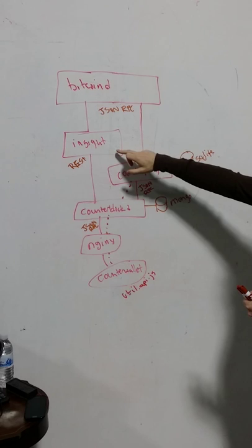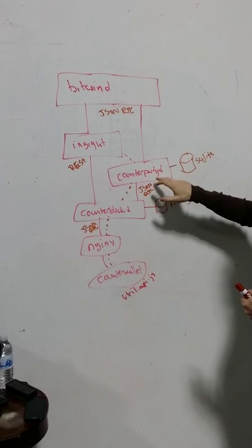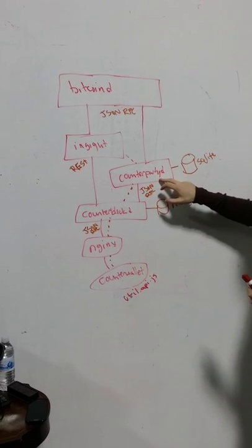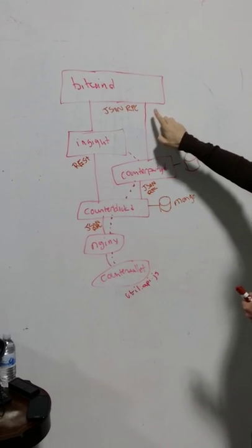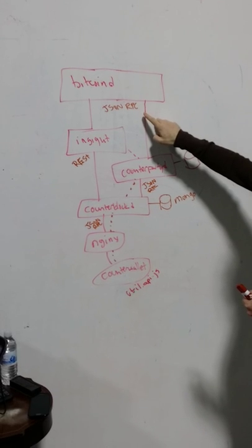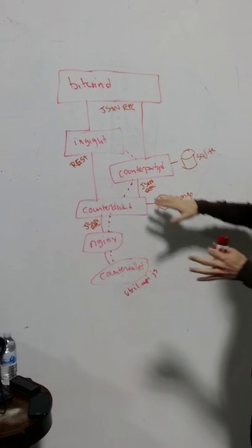So yeah, so we had Bitcoin D, we got Insight, the role that that has. Counterparty D is a counterparty reference client. So counterparty D essentially, it will communicate to Bitcoin D, the JSON RPC interface. It also can communicate to Insight optionally.